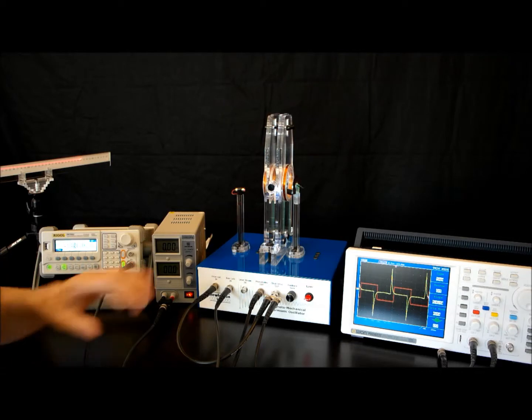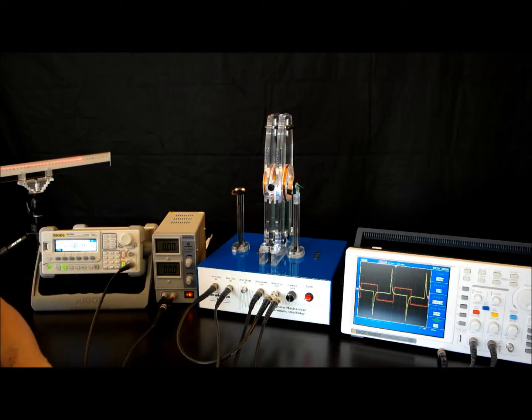Then we know the resonant frequency. From that we get the spring constant without any fields. If I add the fields, then I get a different spring constant. Again, that's related to mu times B. I calculate B from the current, and then I can get the magnetic moment of that magnet.